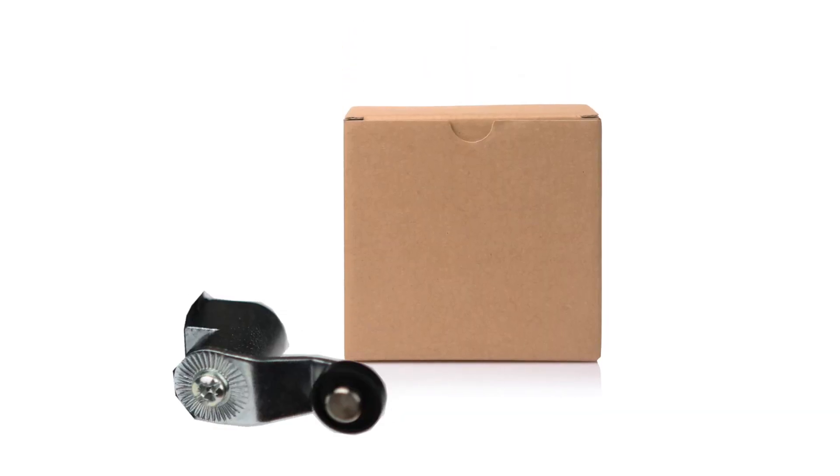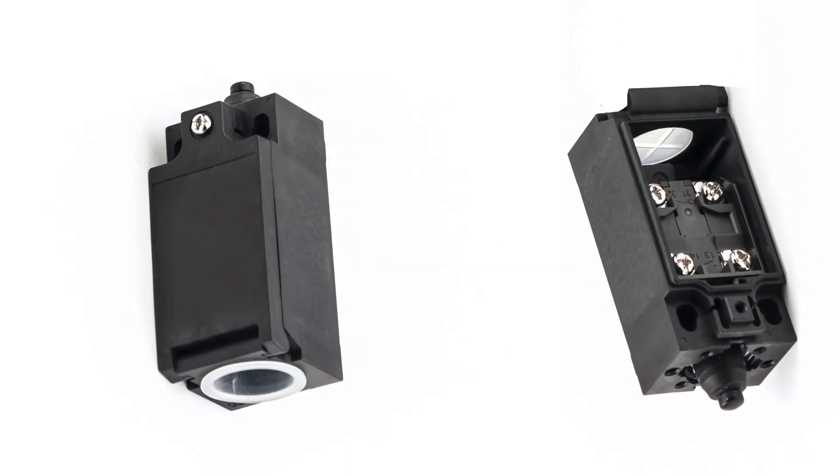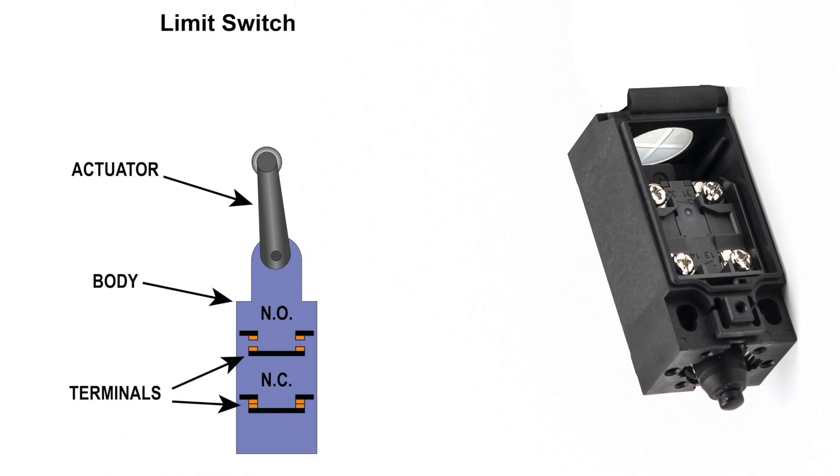The actuator is the part that comes in contact with the target. The body is where you will find the terminals that will be wired. The contacts inside the body can consist of normally open and normally closed and can be either maintained or momentary.